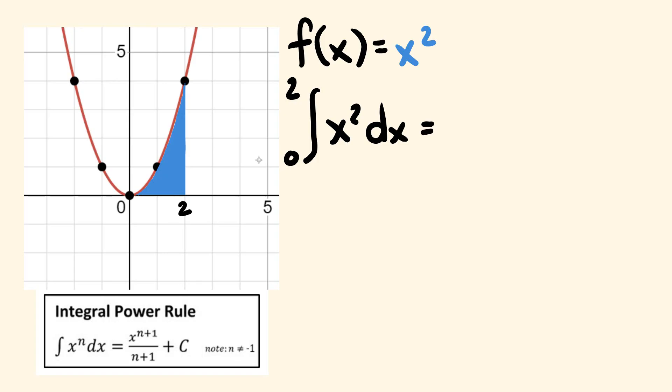We have x squared here. Now, using the integral power rule, n is equal to 2, so we have x to the n plus 1, which is x cubed, and this is all divided by n plus 1, which is equal to 3.